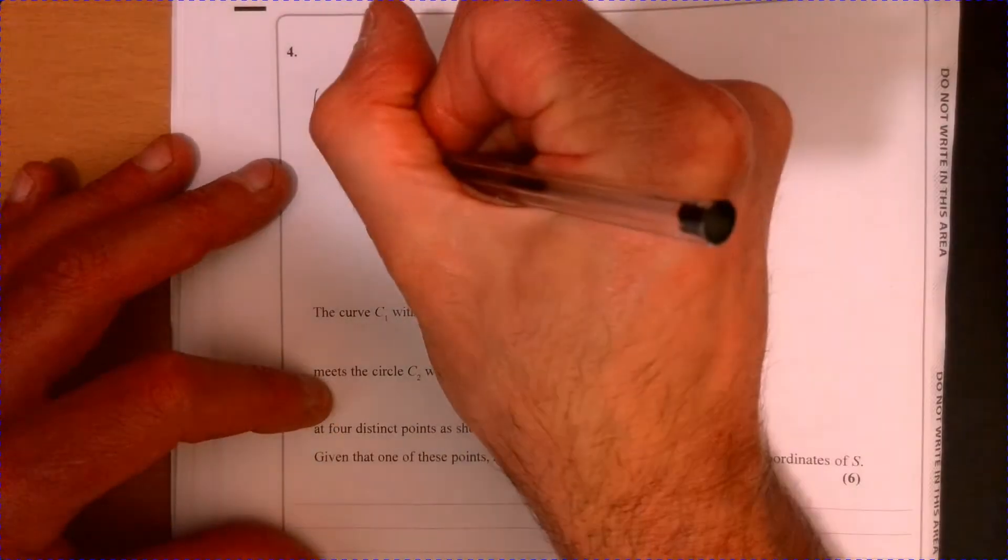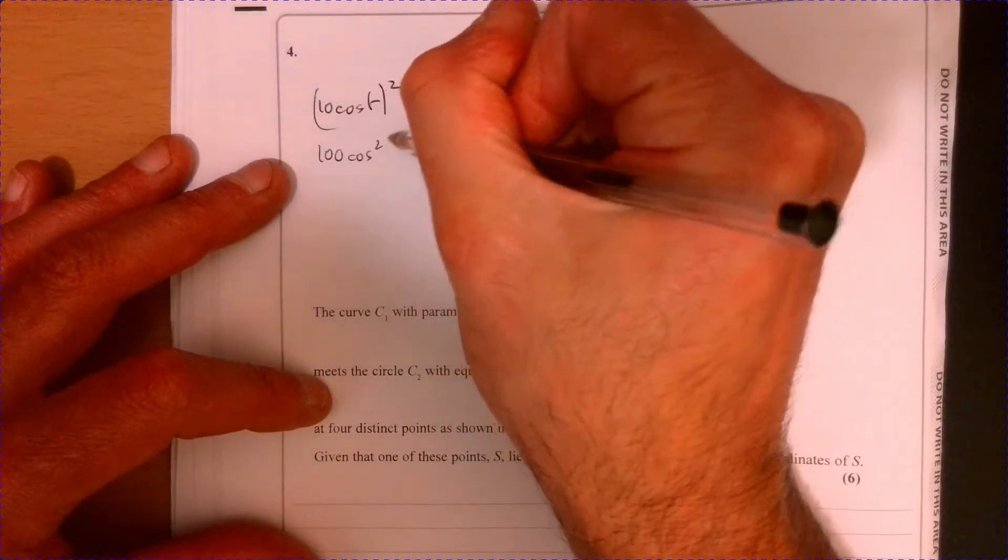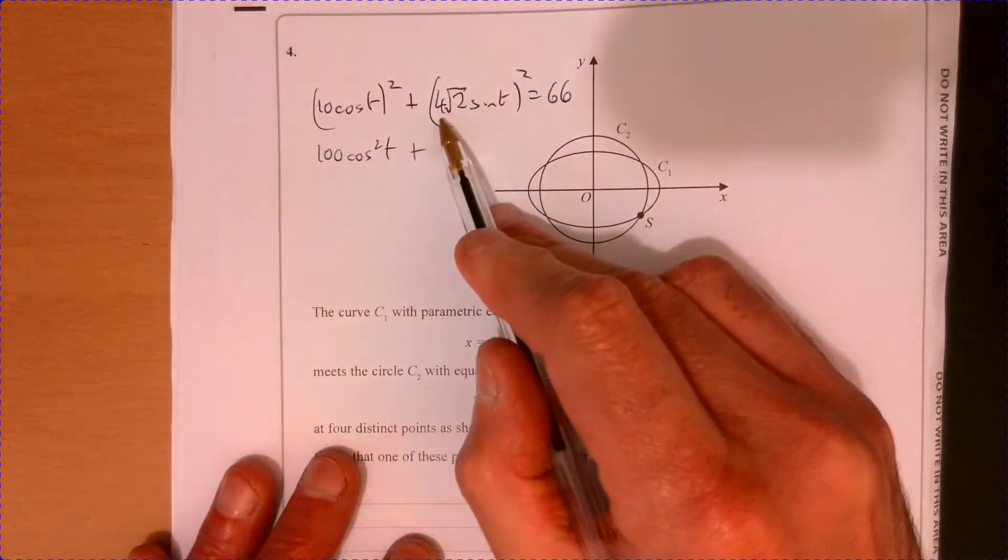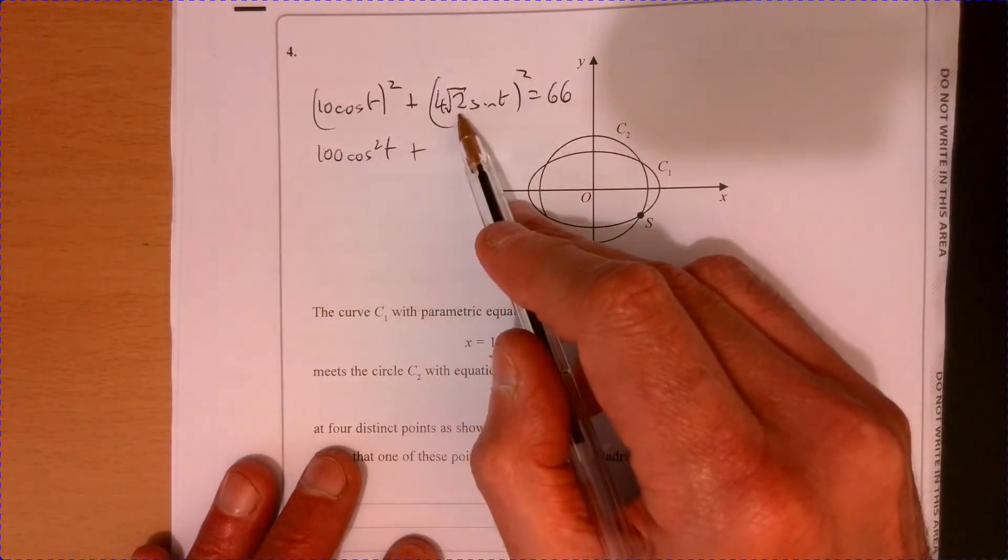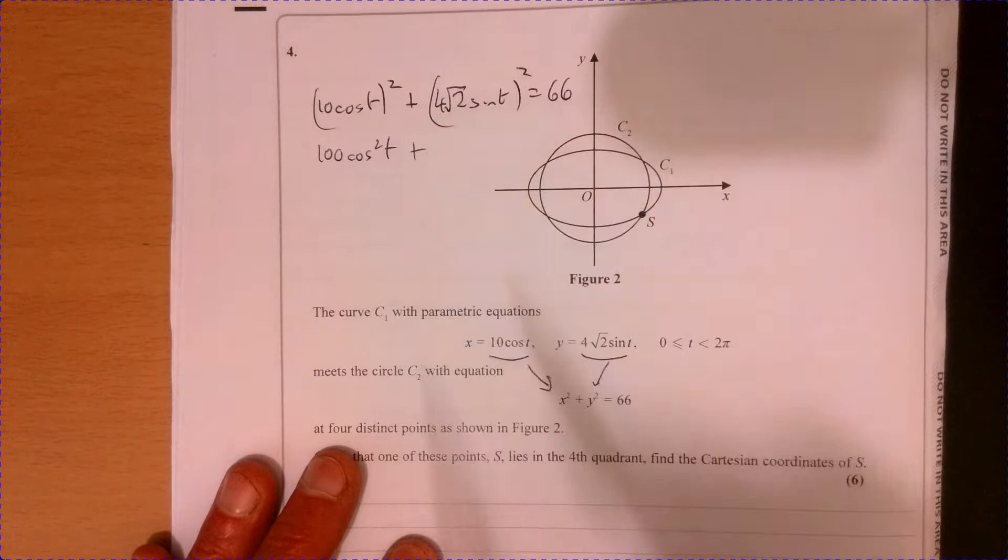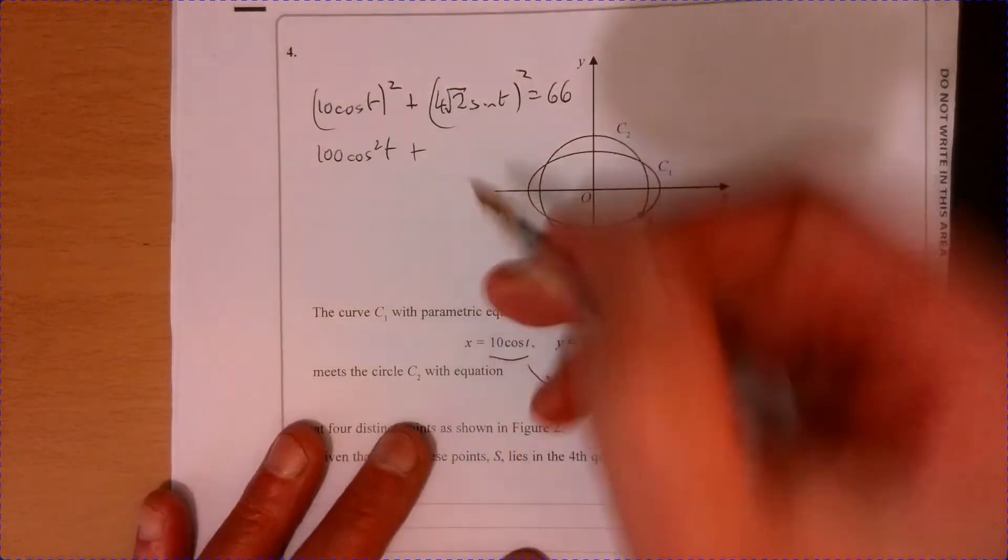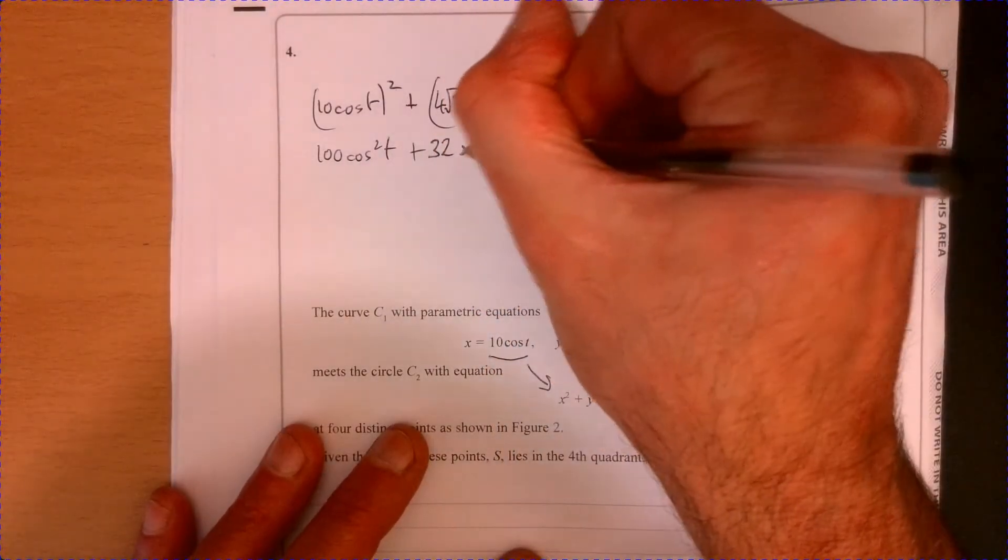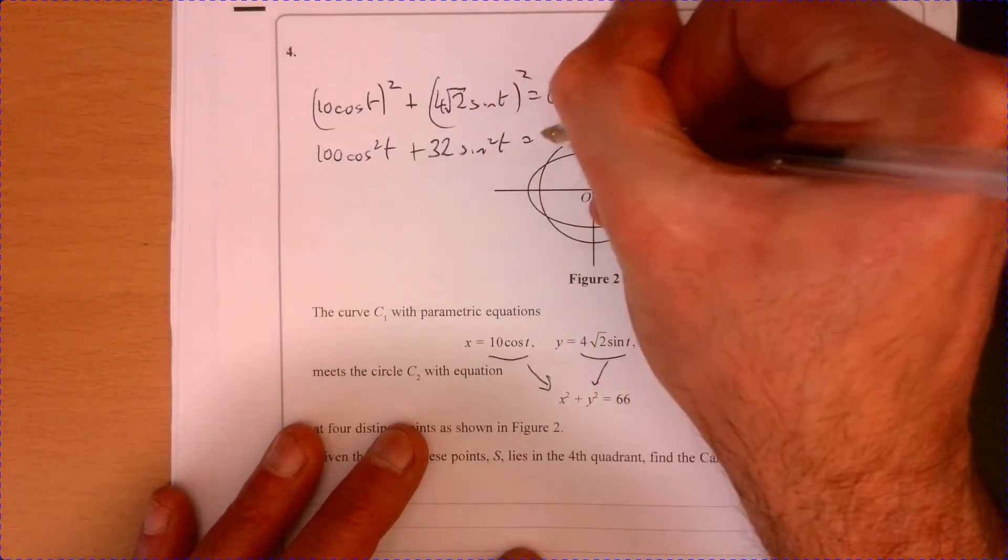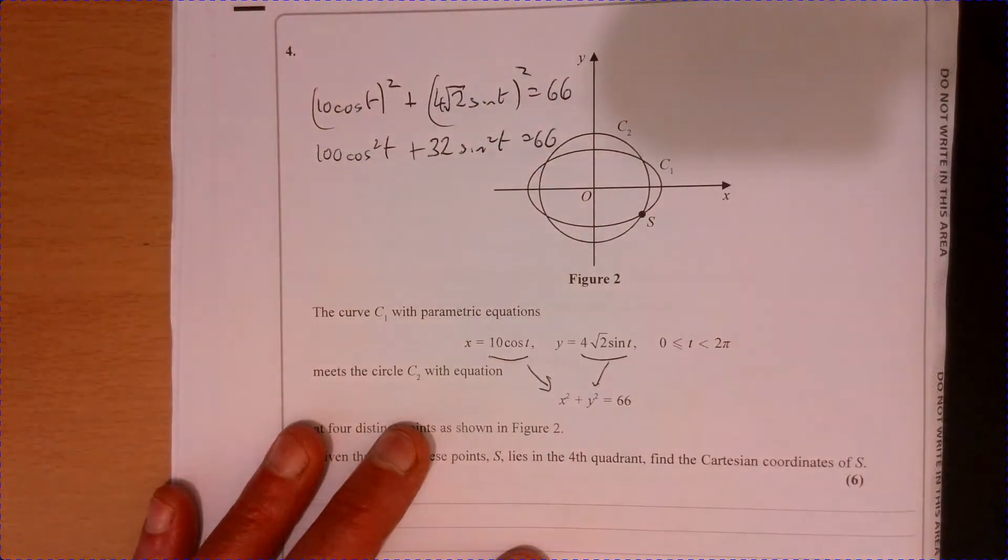Well, okay, let's multiply these guys out. 100 cos squared T plus, so four root two squared. So four times four is 16. Root two times root two, that's two. So that's going to be 32 sine squared T. And that equals 66.